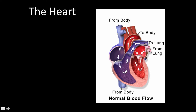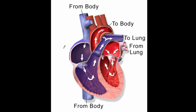Now if we're taking a look at the function, we've got this chamber right here, which is the right atrium. Blood flows from the body — from the upper part of the body and from the lower part of the body — into the right atrium. Then it goes through the valve, the tricuspid valve, into the right ventricle. The ventricle contracts, and then it goes through the pulmonary valve, and it goes to one lung on one side and then into a lung on the other side.